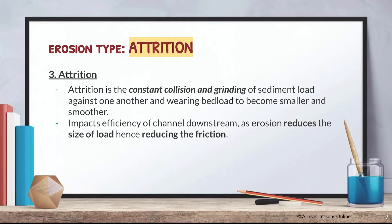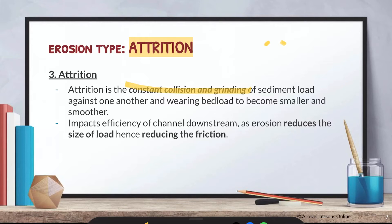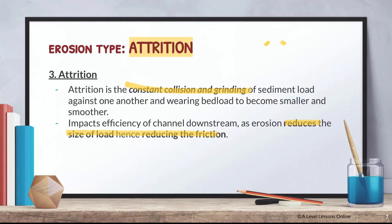Attrition is the constant collision and grinding of sediment load against one another within the river itself. When two sediments constantly collide and grind, they become even smaller over time. This impacts channel efficiency downstream — as the rocks hit each other they become smoother, resulting in less friction because water can pass through more seamlessly. This improves channel efficiency, meaning higher velocity and greater discharge through the river.